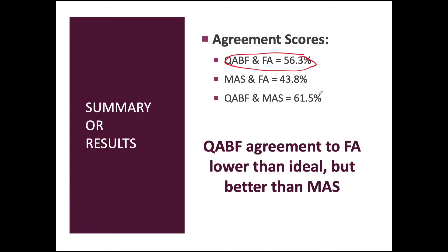The QABF agreement to the FA was lower than ideal — 56% correspondence. They say it was better than the MAS, but the implication is: if we took 10 individuals and only ran the QABF, there's a chance we'd only identify the correct function for about five of them. For the rest we would get a false positive or false negative, and that could have serious implications for treatment — we could design a treatment that worsens the behavior. So 56% is not good, but at least it was better than the Motivational Assessment Scale.